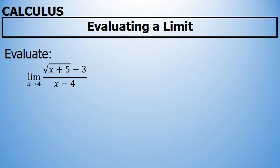When evaluating a limit, such as the limit as x approaches 4 of the square root of x plus 5 minus 3 all over x minus 4, the first strategy that should be tried is direct substitution.